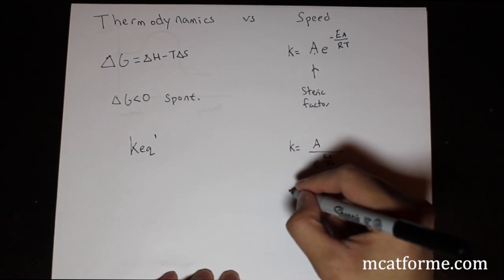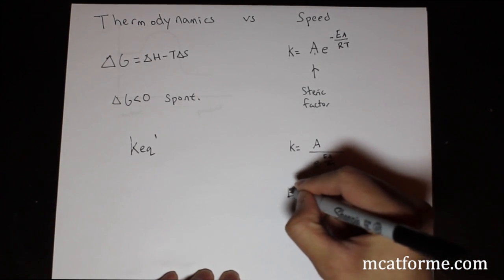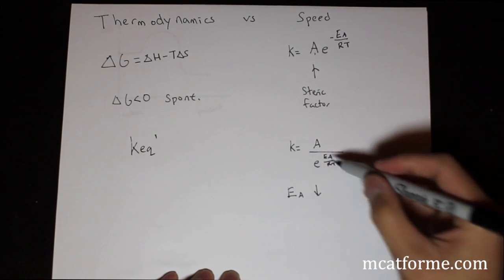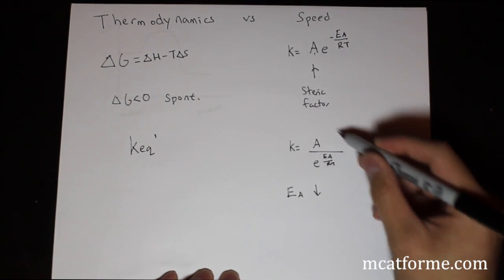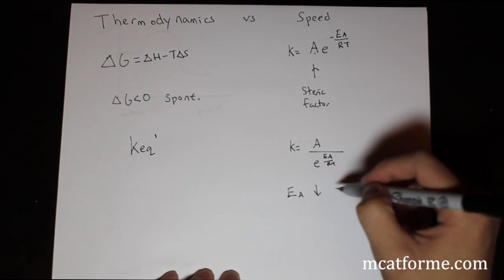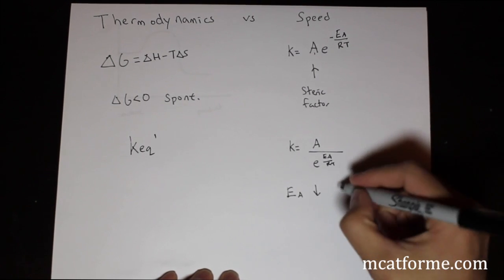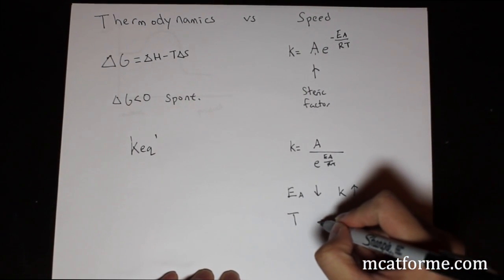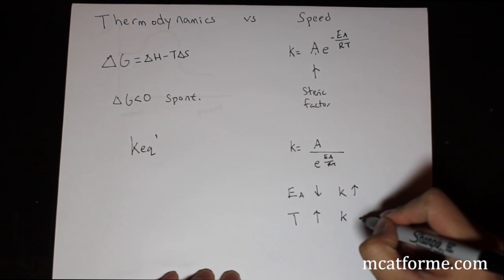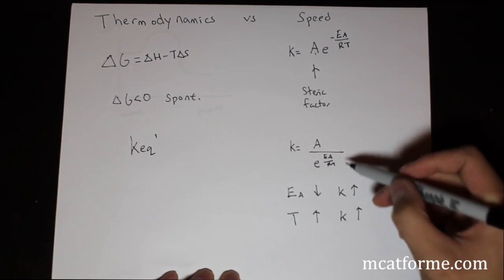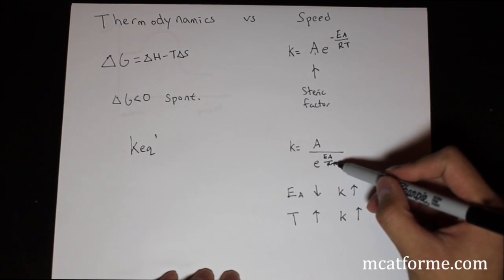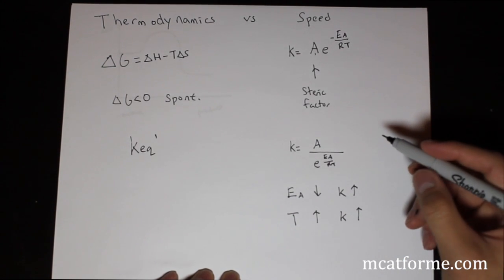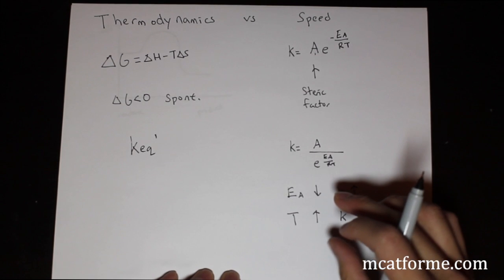So what this is saying is that if we decrease the activation energy, this number will go down, then the net reaction will go up, the net equation will go up, so K will increase. If temperature is increased, K will also increase. We see that temperature will decrease this bottom term and that will make this whole K be bigger.